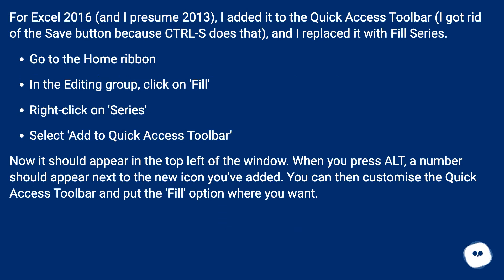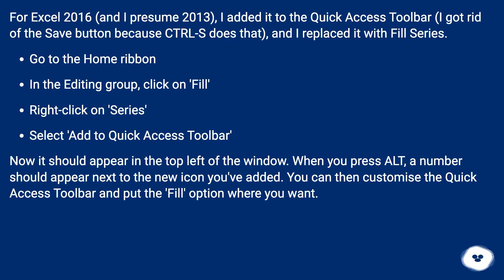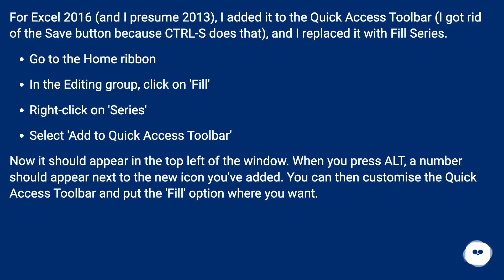For Excel 2016, and presumably 2013, I added Fill Series to the Quick Access Toolbar. I got rid of the Save button since Ctrl+S does that, and replaced it with Fill Series. Go to the Home ribbon, in the Editing group click Fill, right-click on Series, and select Add to Quick Access Toolbar. It should appear in the top left of the window. When you press Alt, a number will appear next to the new icon. You can then customize the toolbar to position the fill option where you want.